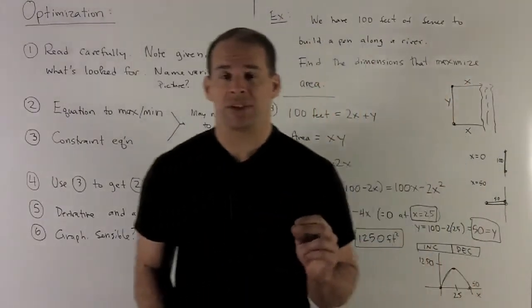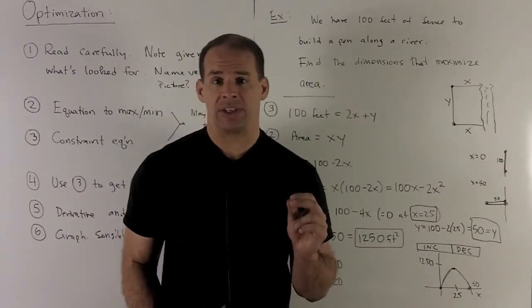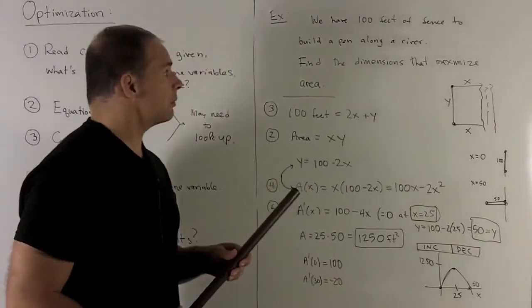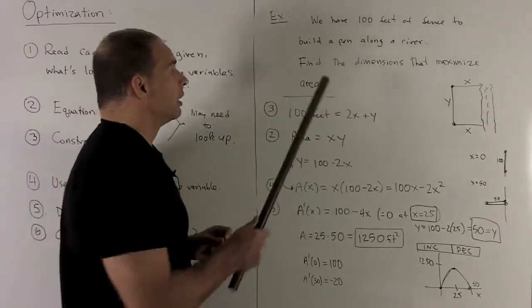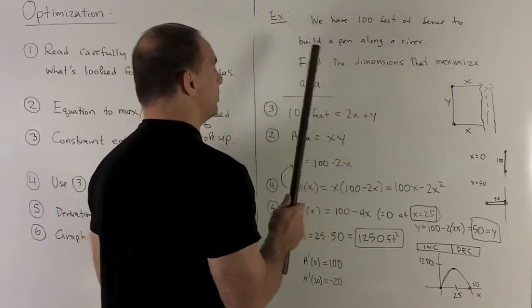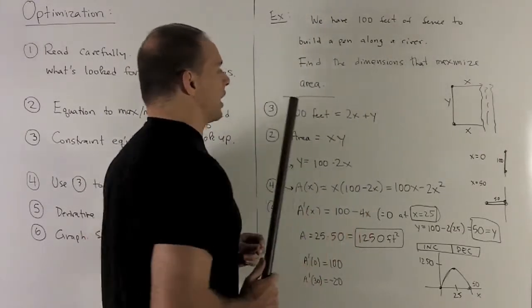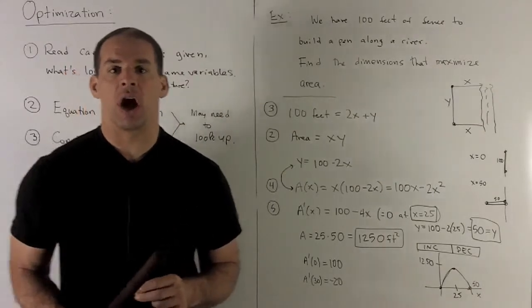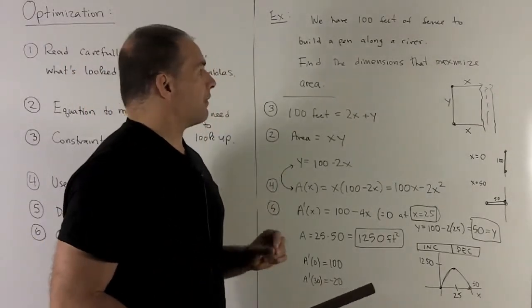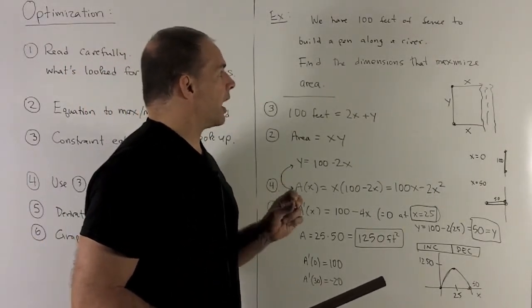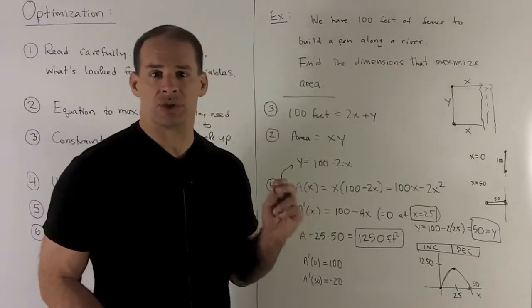So let's run this through an example just to see how each step works. My problem is, I have 100 feet of fence to build a pen along a river. Find the dimensions that maximize area. So to start off, let's see, I have 100 feet of fence, but I don't have any variables to put that to, so let's draw a picture.